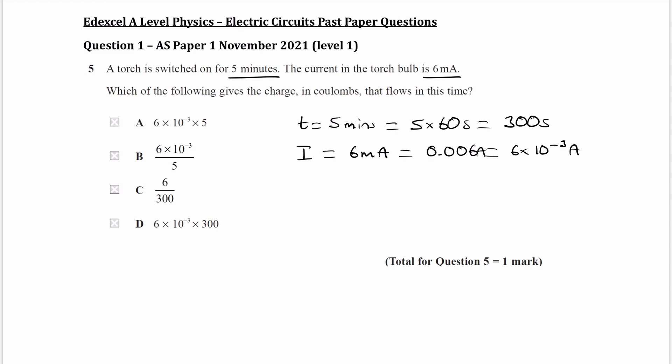So we are asked for the charge. Which of the following gives the charge that flows in this time? So current is equal to the change in charge or the flow of charge over the time that it takes. So we can rearrange this for charge. Delta Q is then i delta T.